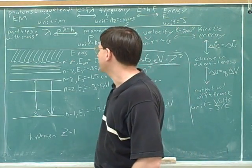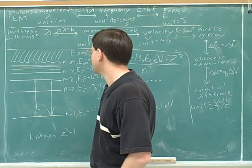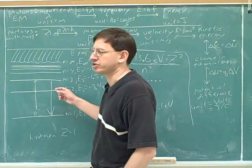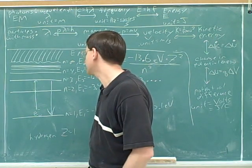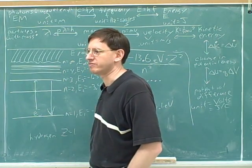What this means is every type of atom only has a certain emission spectrum. It only emits certain colors and wavelengths. Every atom has certain colors and wavelengths that it emits based on the separation of its energy levels.